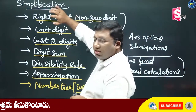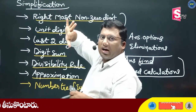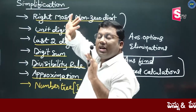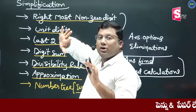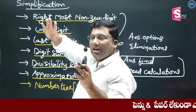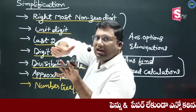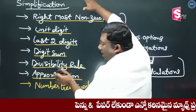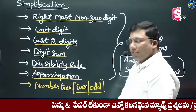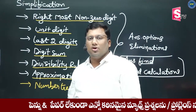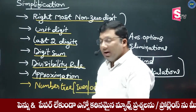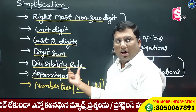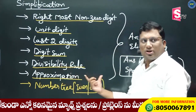We look at the simplification problem. We see these seven steps — the level things are set and each level is set. In this class I will explain the same concepts: right-most non-zero digit, unit digit, last two digits, digit sum, divisibility rule, approximation, number 3.